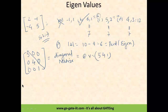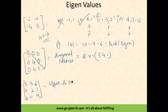Similarly, for an upper triangular matrix such as [5,3,6; 0,2,1; 0,0,4], you can directly say the eigenvalues are the diagonal elements: 5, 2, and 4. That's how you can directly calculate eigenvalues for diagonal and upper triangular matrices.